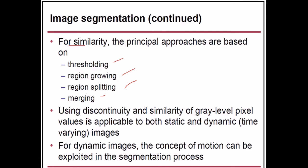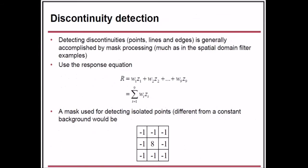Using discontinuity and similarity of gray level pixel values is applicable to both static and dynamic images. Dynamic images are those which vary with time, and for dynamic images the concept of motion can be exploited in the segmentation process.